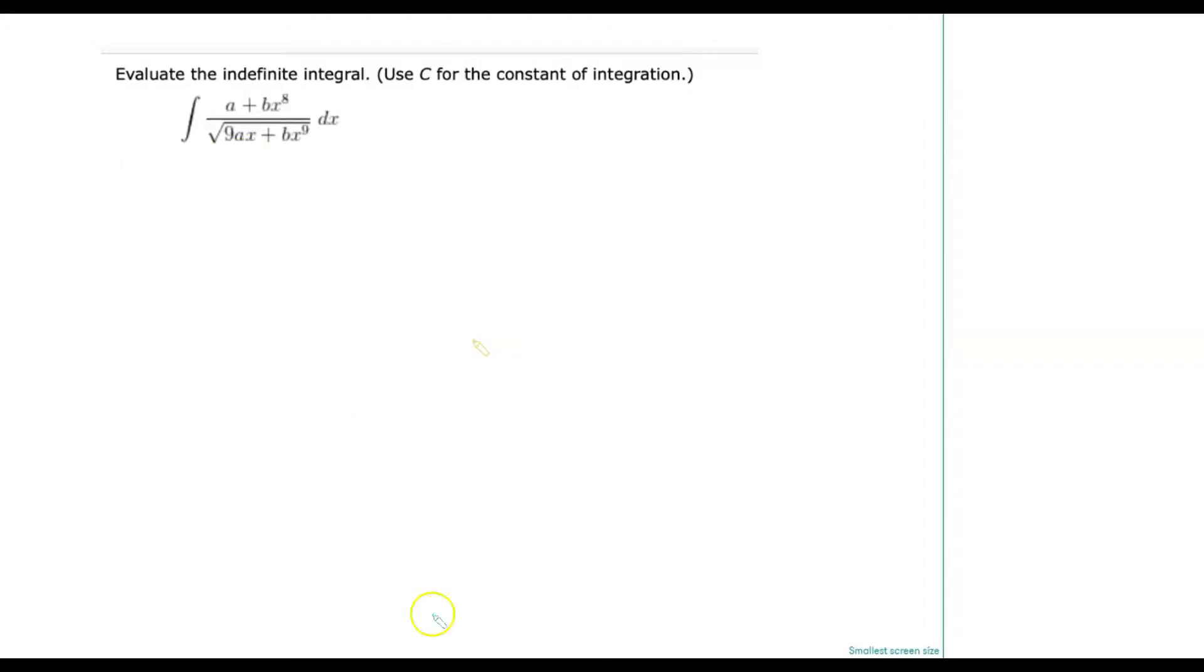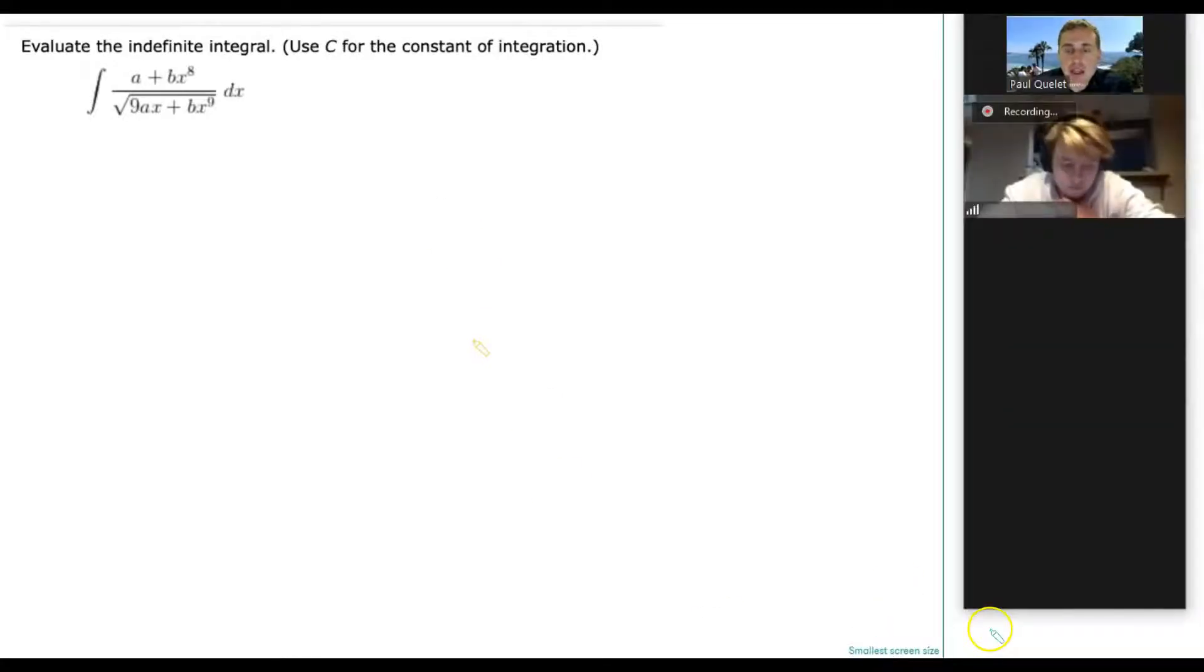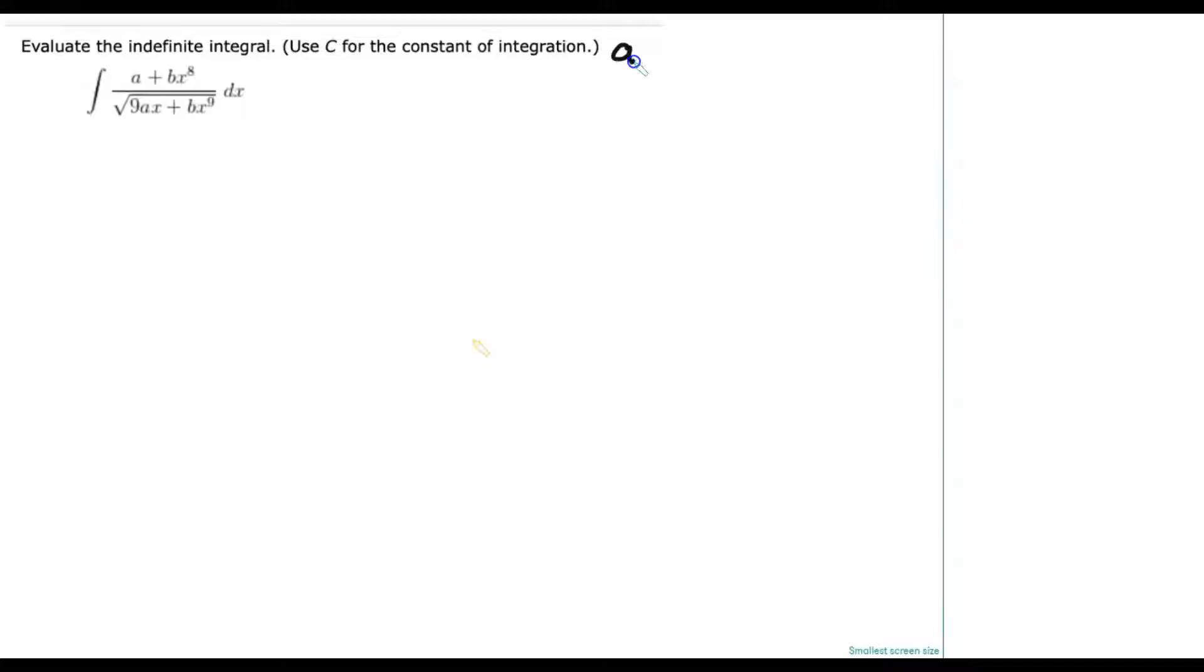We're going to look at three different problems and I'm going to explain how these things work right now. It says evaluate the indefinite integral, use C for the constant of integration. We want to evaluate this. Now, by the way, a lot of times in Calculus, the symbols a and b usually refer to constants. So even though it's not very clearly written here, let's just assume a is a constant and then b is a constant. These are just very common letters that are used for constants.